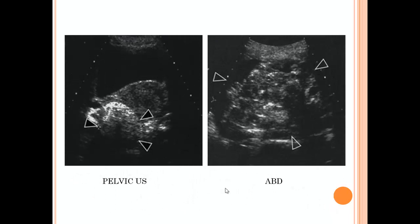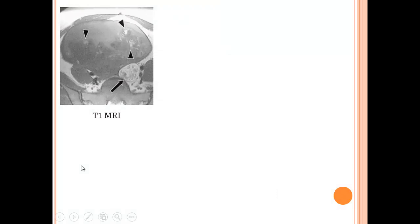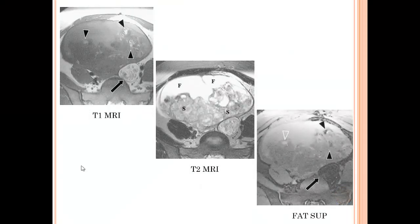On ultrasound, a case of immature teratoma shows scattered echogenic calcification and fat components. To differentiate: immature teratoma has scattered fat globules and scattered calcification, while mature cystic teratoma shows a large calcification related to the Rokitansky nodule and a large amount of fat filling most of the cyst. This bilateral case also demonstrates the difference. Another case of immature teratoma is seen on MRI.